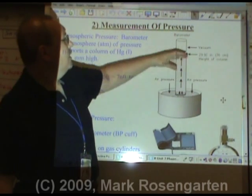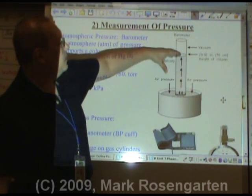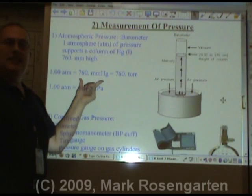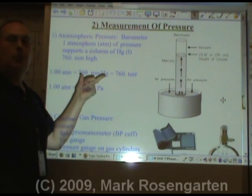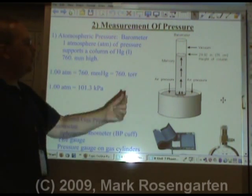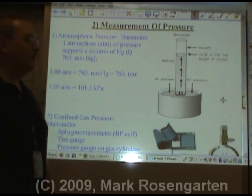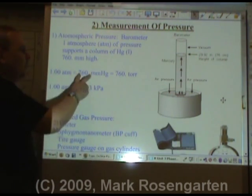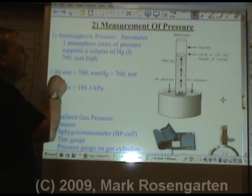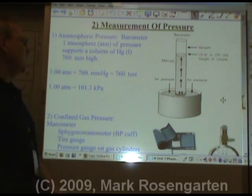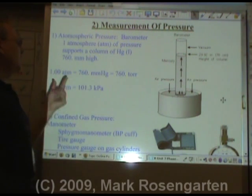If the pressure is 30.01 inches and falling, that means there's less pressure pushing down, so the height of the mercury column will go down. 760 millimeters of pressure is also referred to as 760 torr, named after Evangelista Torricelli. It's also referred to as 1.00 atmosphere, and the atmosphere is a standard unit of pressure.